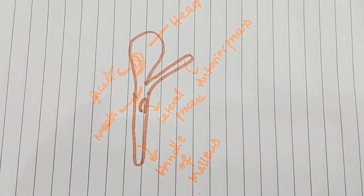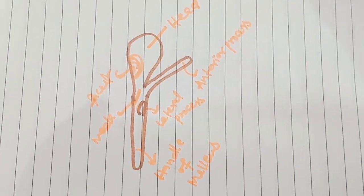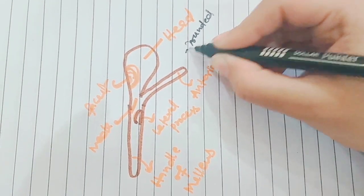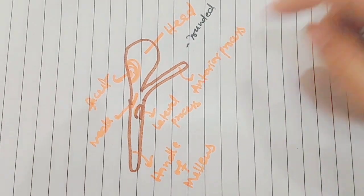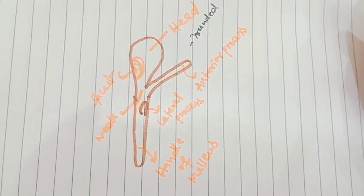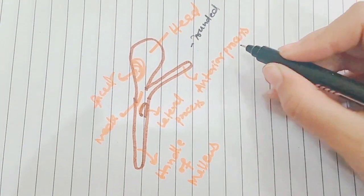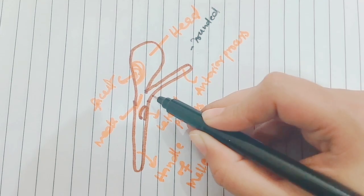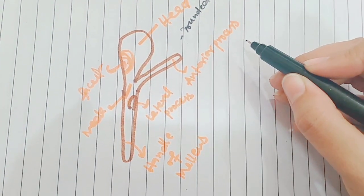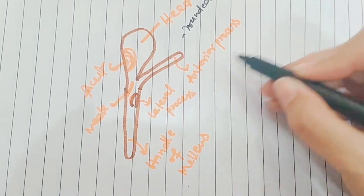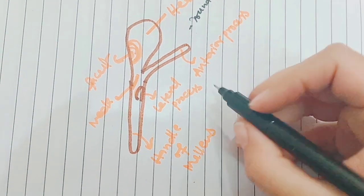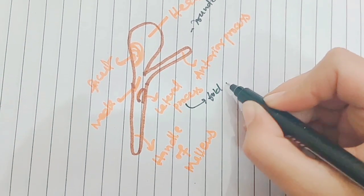The head is rounded. The head is attached to this facet. The anterior process is a sharp pointed bone structure attached to the tympanic membrane. The lateral process is also attached to the tympanic membrane.